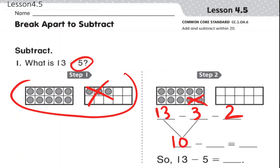So 13 minus 3 minus 2. We know that when we first took away 3, we made a 10. So 13 minus 3 equals 10. And now we still have to subtract 10 minus 2.